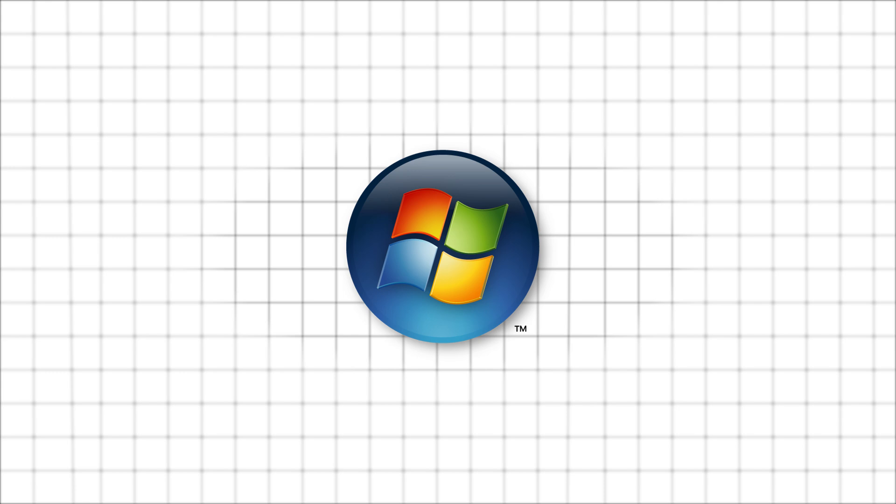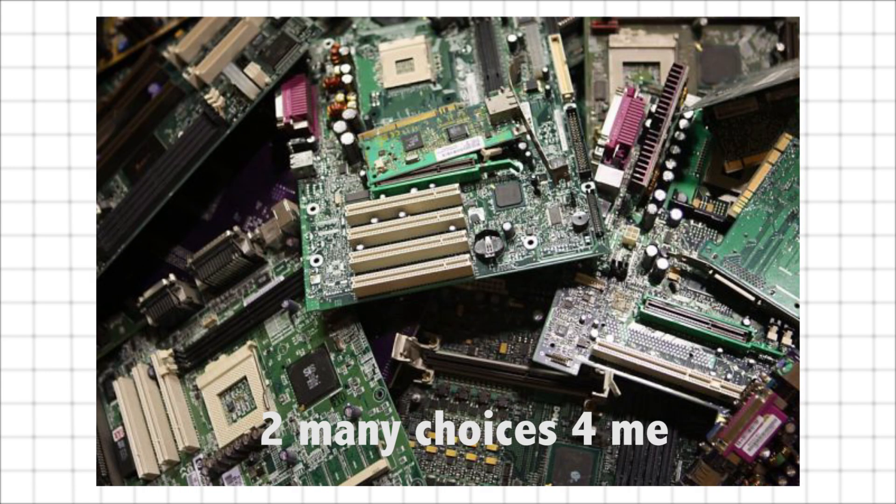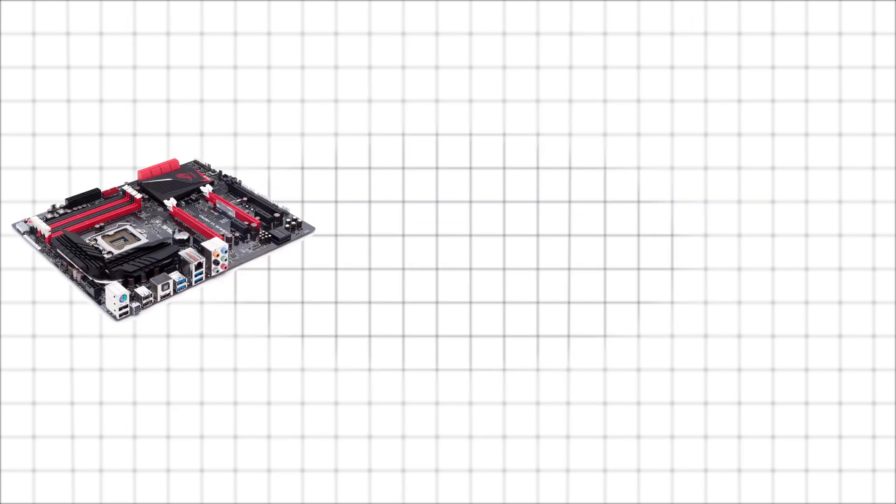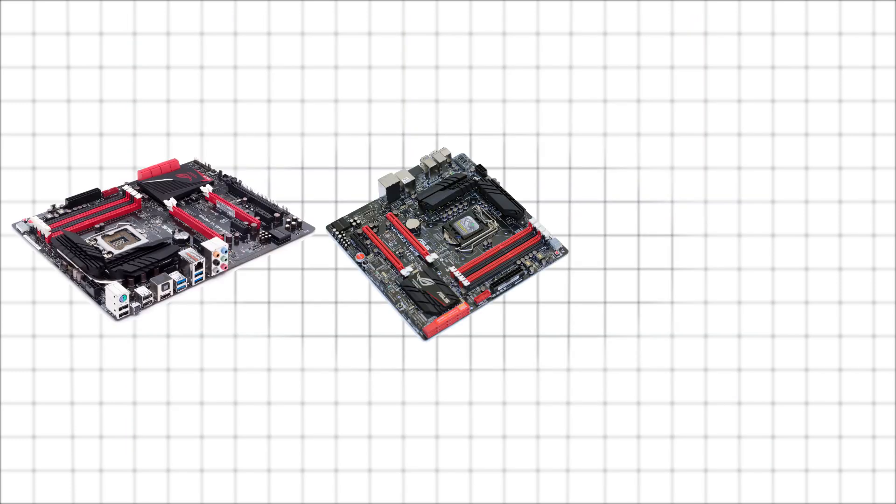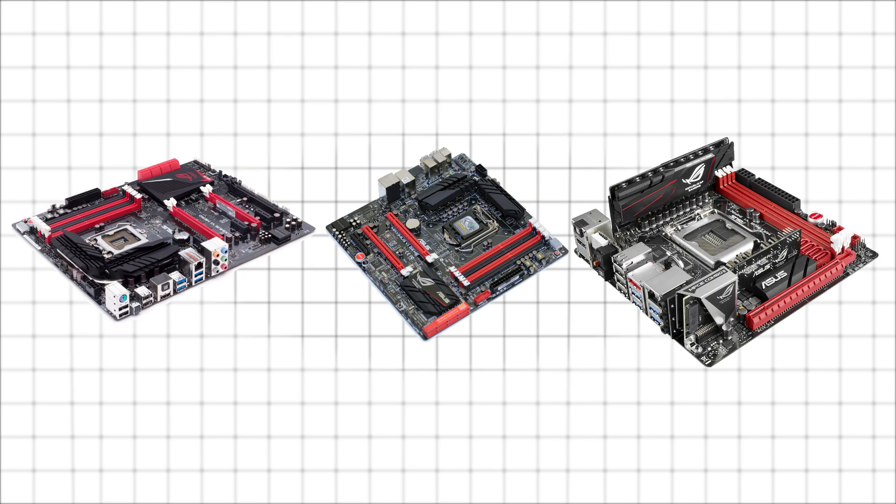Okay, so with that out of the way, let's get started. The first part of choosing your motherboard is choosing the form factor, or size of your motherboard. There are three main sizes of motherboards: ATX, MicroATX, and Mini-ITX.